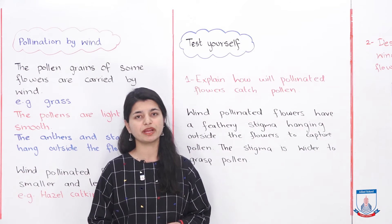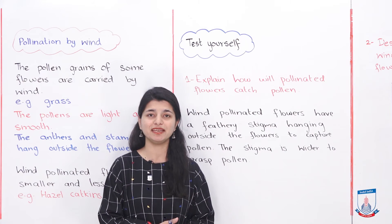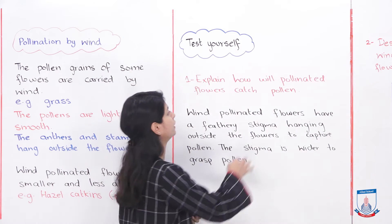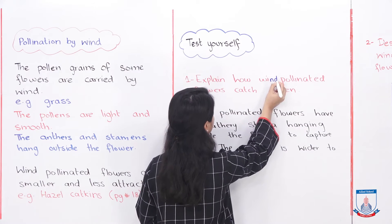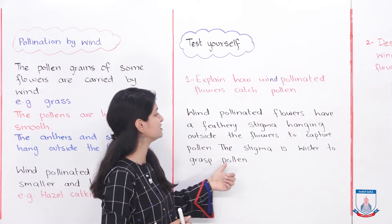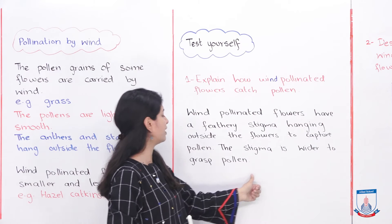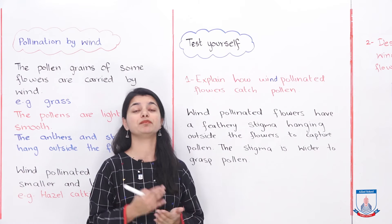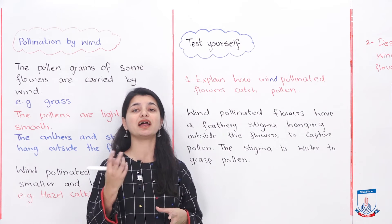The first question from test yourself is: explain how wind pollinated flowers catch pollen. Wind pollinated flowers have a feathery stigma hanging outside the flower to capture pollen. The stigma is wider to grasp pollen — just as the stamen is outside, the stigma is also outside. Its surface is wide so that it can catch pollen easily.